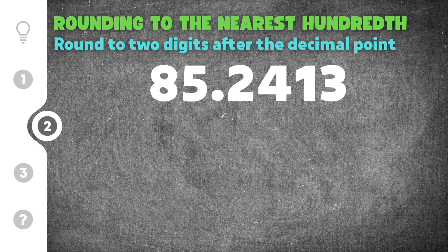Moving on to the next problem, we have 85.2413. We have our decimal point, then the tenths value, then the hundredths value. I'll draw my line after the four, which is in the hundredths place, and then we have the thousandths, which is one. This one will tell us whether the four rounds up or stays the same.